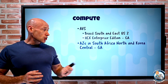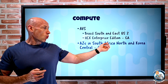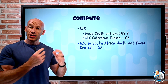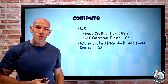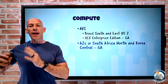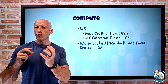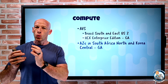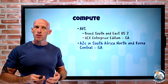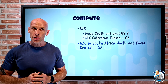Availability zones are now available in South Africa North and Korea Central. Those are the independent power, cooling, and networking zones that give extra resilience for workloads distributed over the three availability zones available in your subscription.